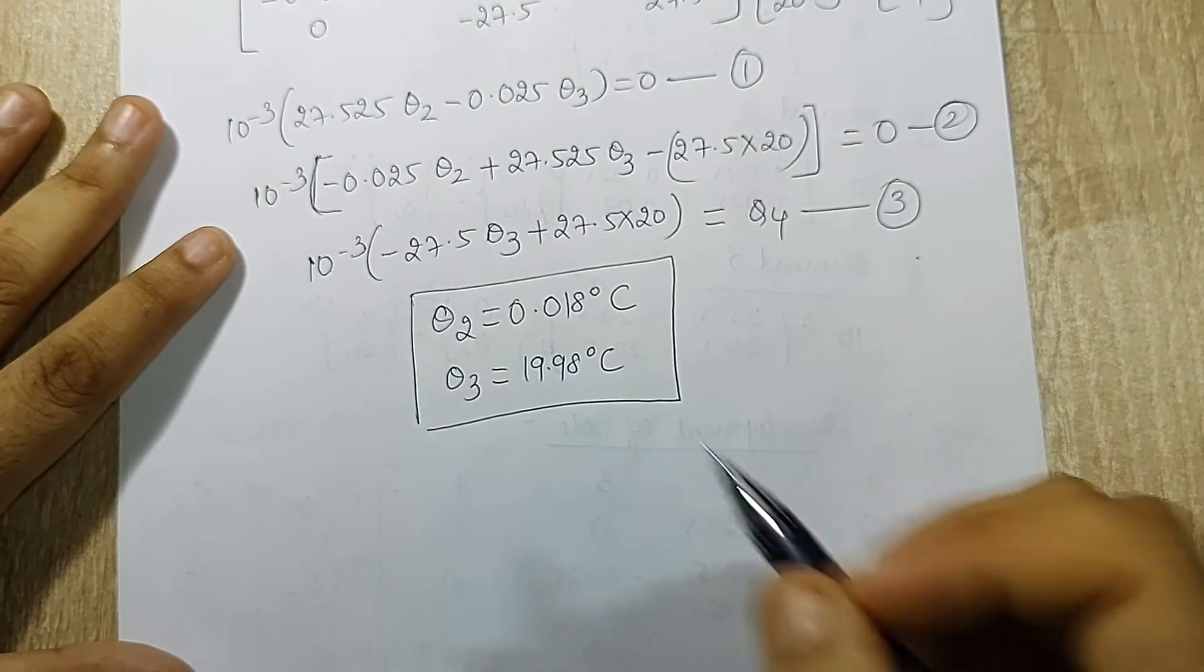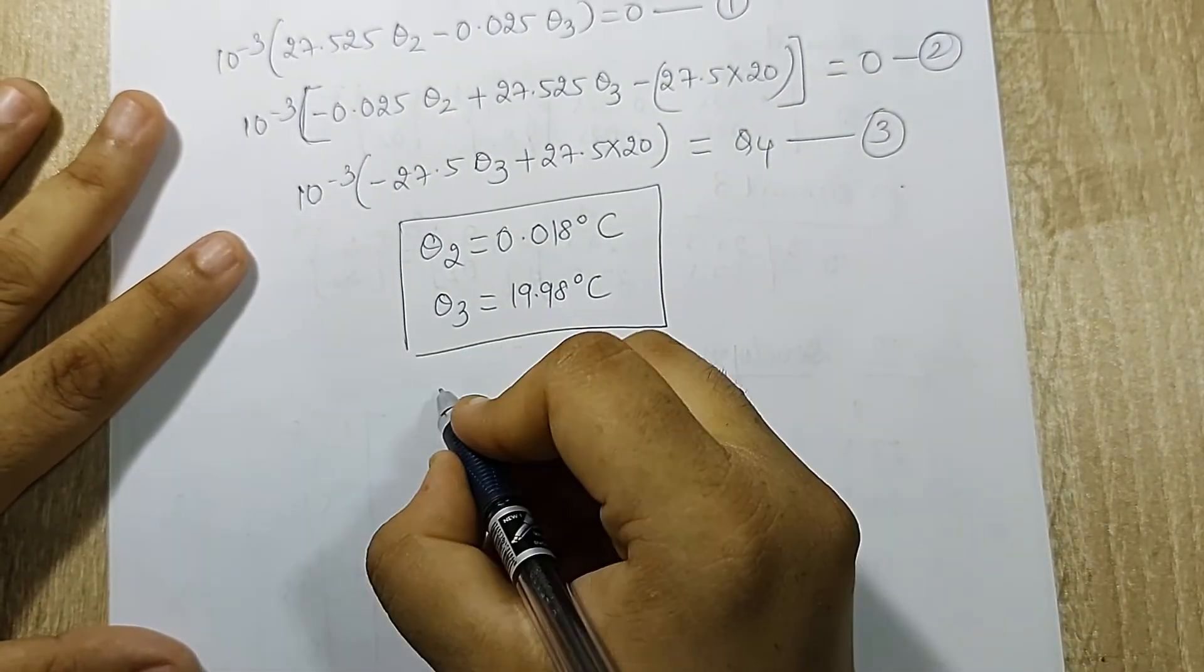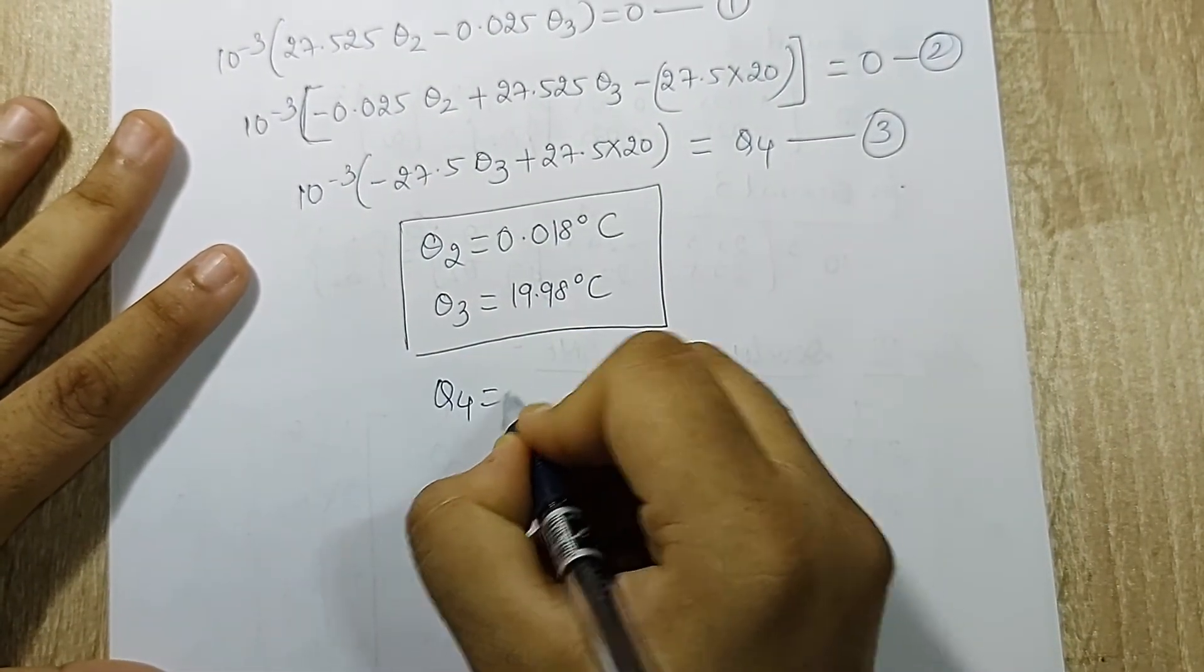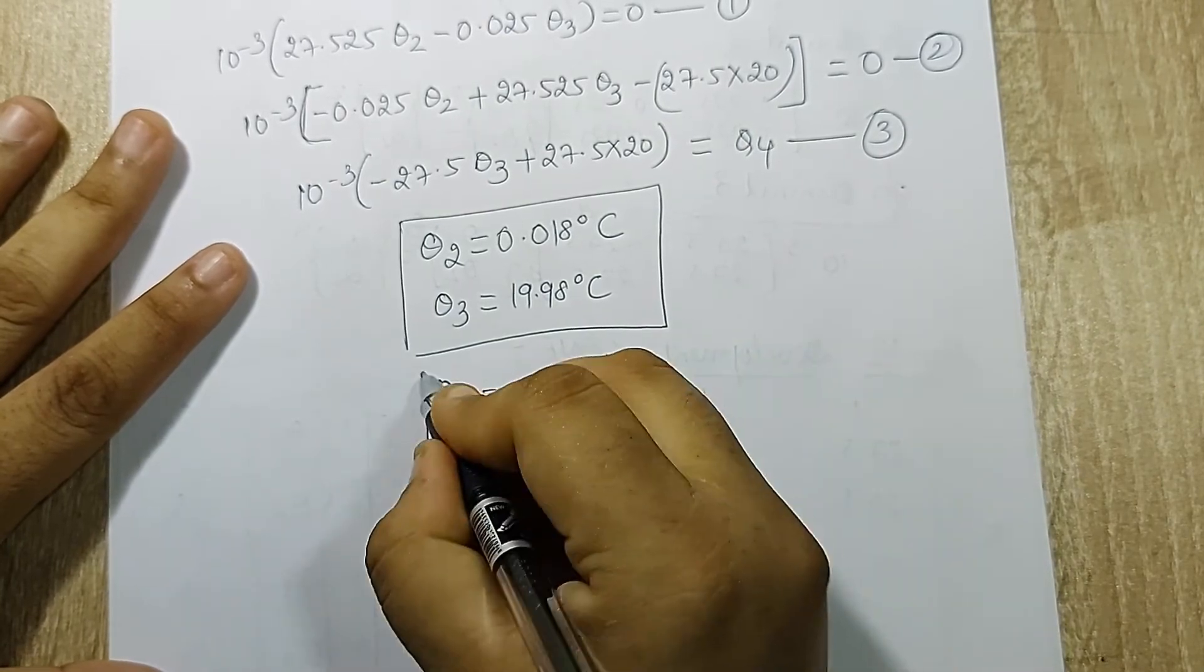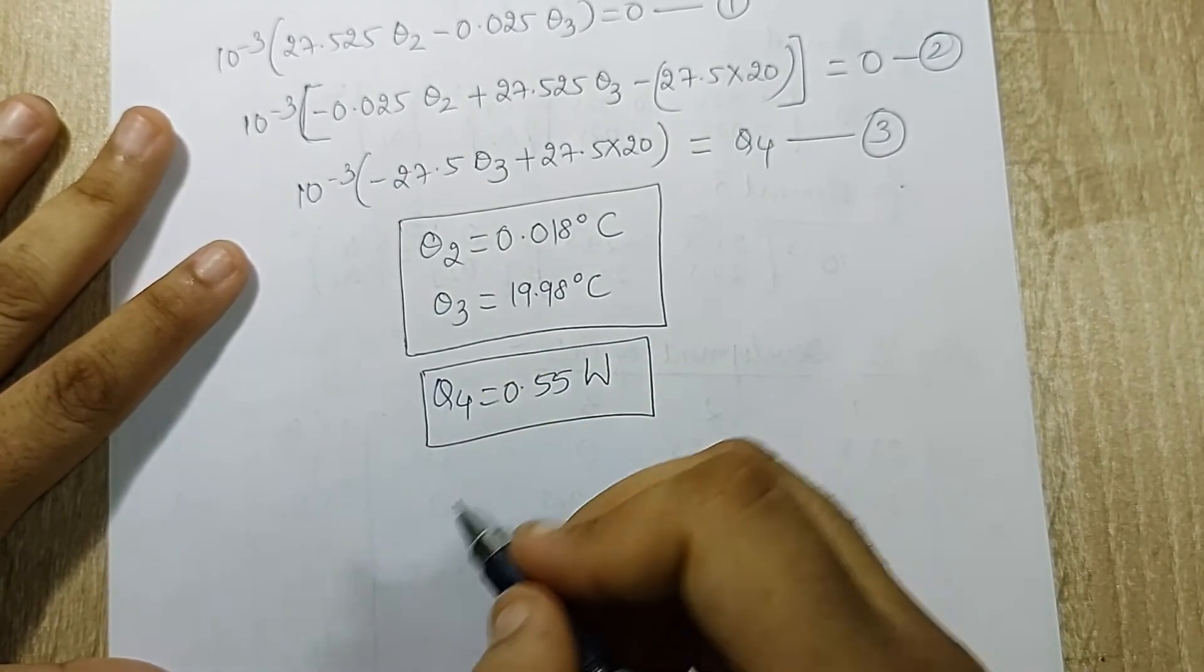When I substitute theta_3 in this equation 3, I will get q_4 as 0.55 watt. Heat flow rate is going to be in watt.